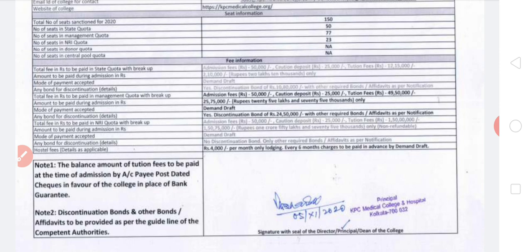The discontinuation bond for management quota is ₹24,50,000 with other required bonds or affidavits as per notification — that is the remaining amount after paying around ₹25 lakhs at admission. In the note at the bottom-left corner: Note 1 states the balance amount of tuition fees is to be paid at the time of admission by account payee post-dated cheque in favour of the college in place of bank guarantee. Note 2 states discontinuation bond and other affidavits are to be provided as per guidelines of the competent and college authorities.